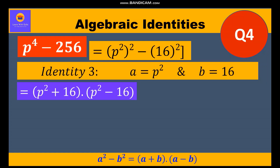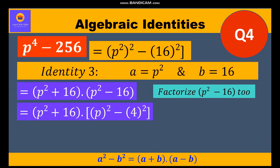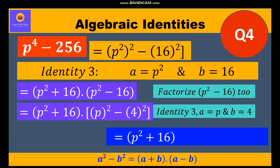Now, we have Identity 3 for a² - b², but no identity for a² + b². So (p² + 16) will remain as it is, and we will further factorize (p² - 16). We can write p² = (p)² and 16 = (4)². This is Identity 3 where a = p and b = 4. So the final factors are (p² + 16)(p + 4)(p - 4).